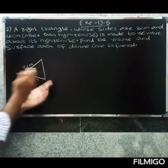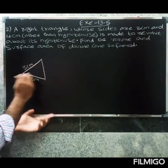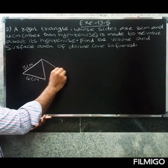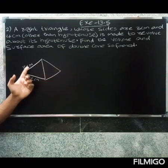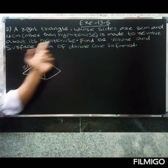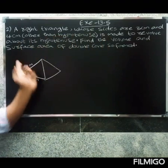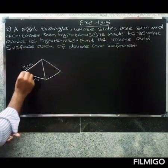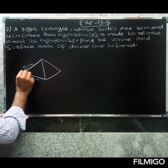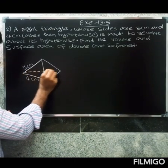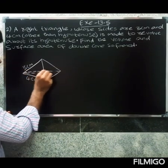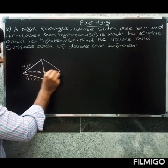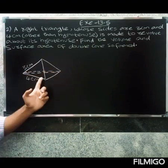So rotate — when we revolve the triangle, it forms a double cone shape. It is made to revolve about its partners. Find the volume and surface area of the double cone form. So this is an independent number problem.